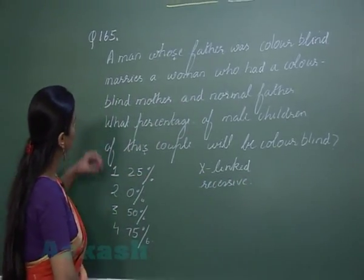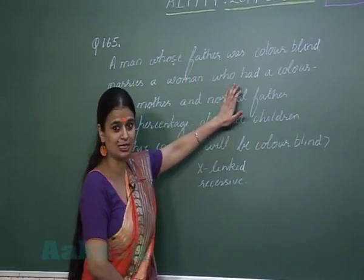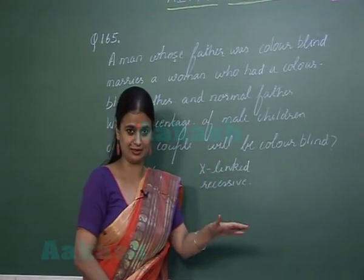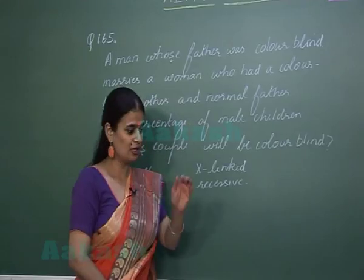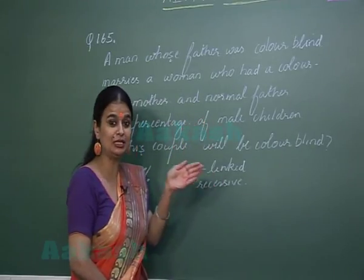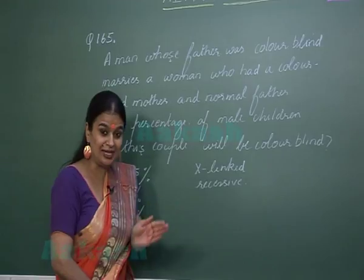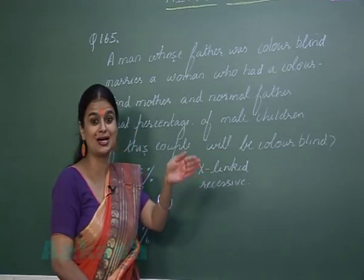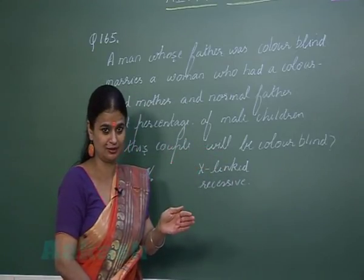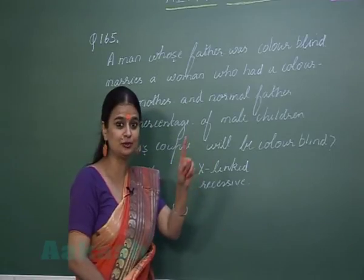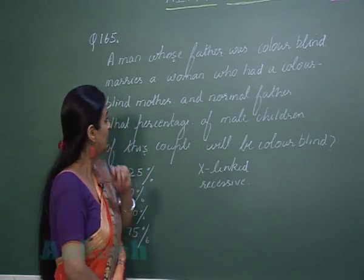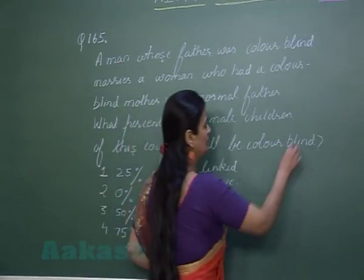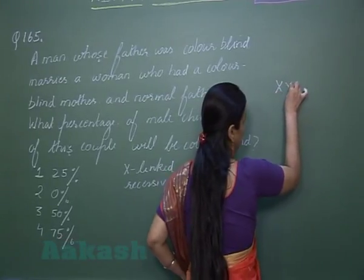Let's see what the parents are here. A man whose father was colorblind — in the case of sex-linked inheritance, traits transfer from father to daughter, then to the grandson. That trait is not transferred from father to son. So in this case the man is normal, and we can write his genotype accordingly.